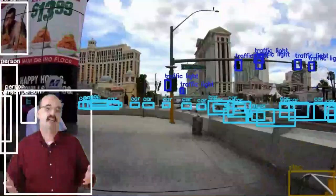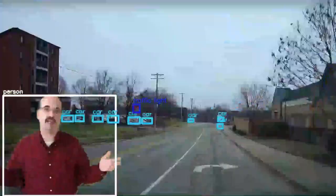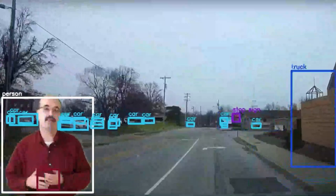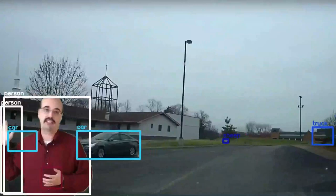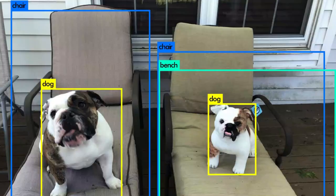YOLO, you only look once. This is an amazing technology that you can see running all around me. It's classifying objects, multiple objects, and doing it very efficiently because it only needs to look once. We'll see how you can transfer this technology into your Python program and receive the actual coordinates and classifications of what it sees going on around you.